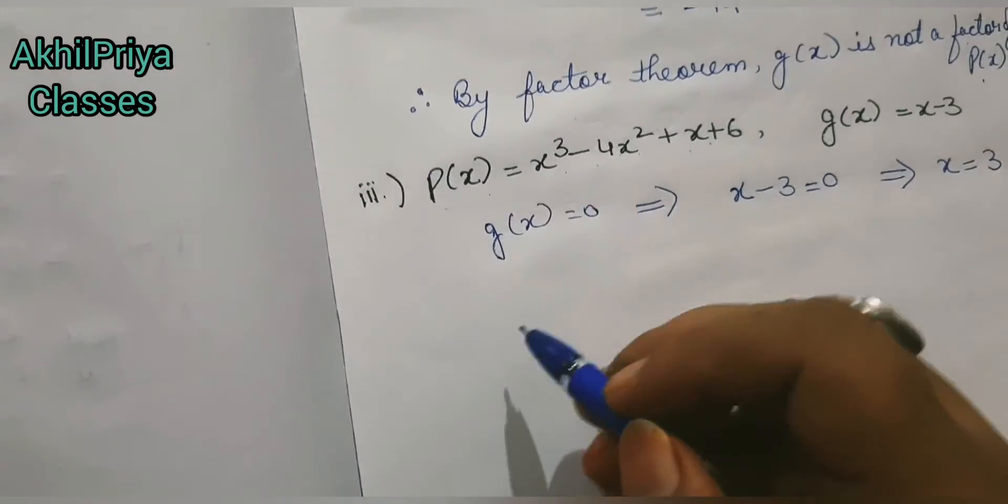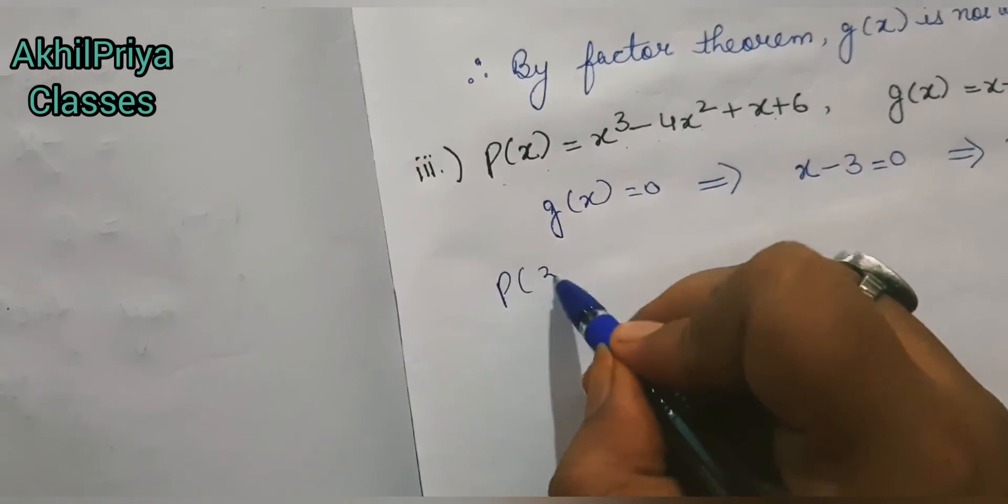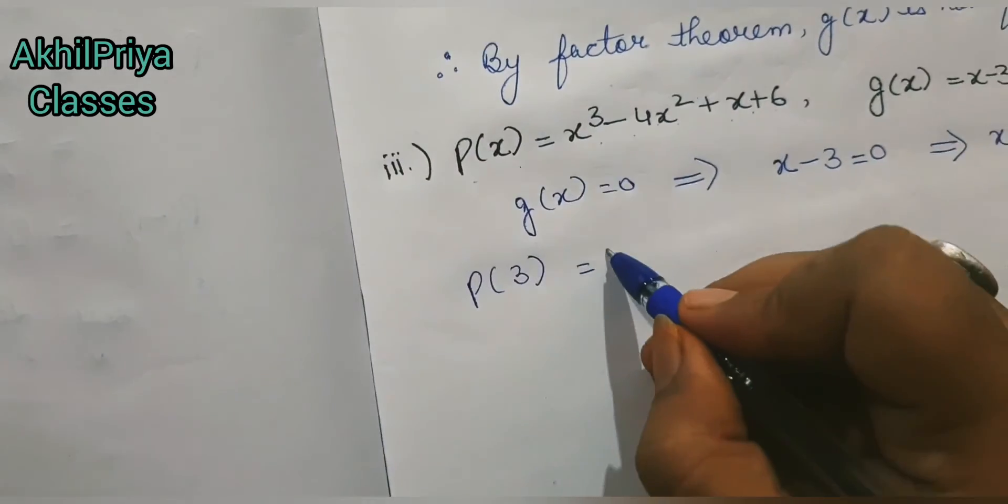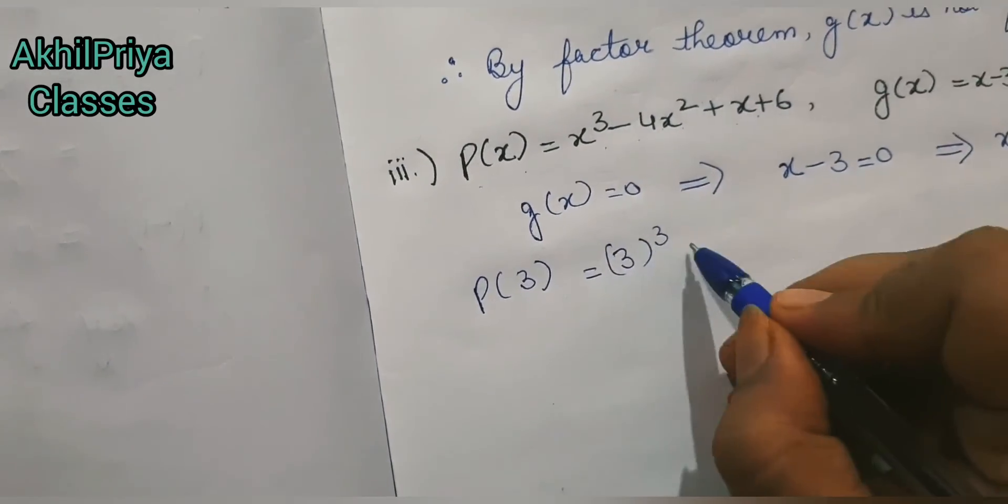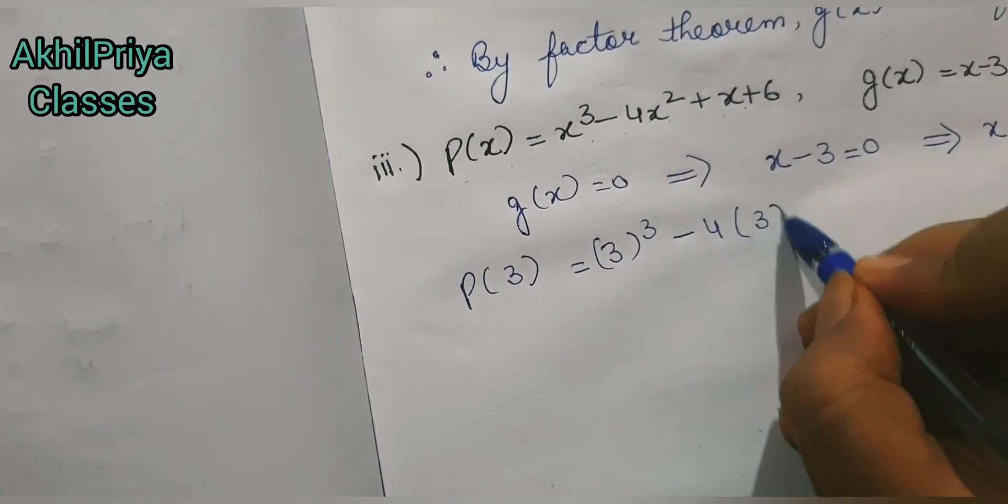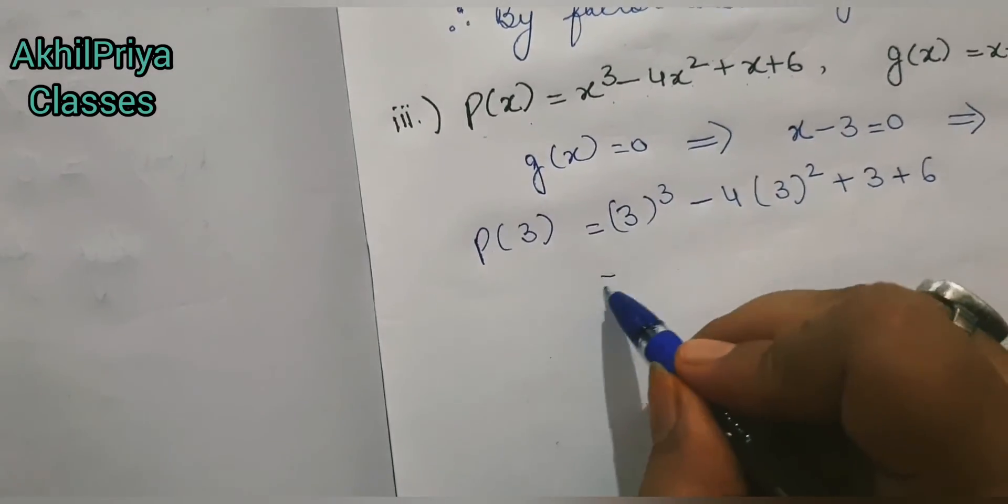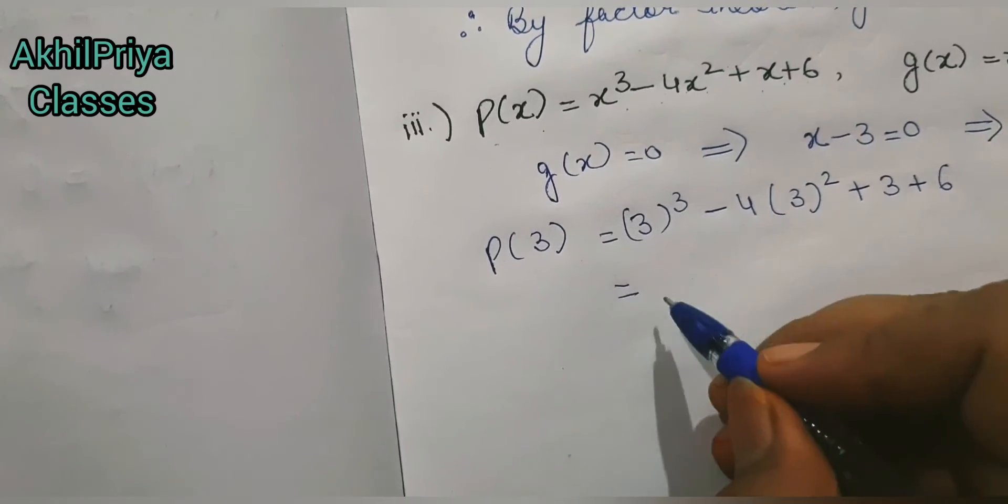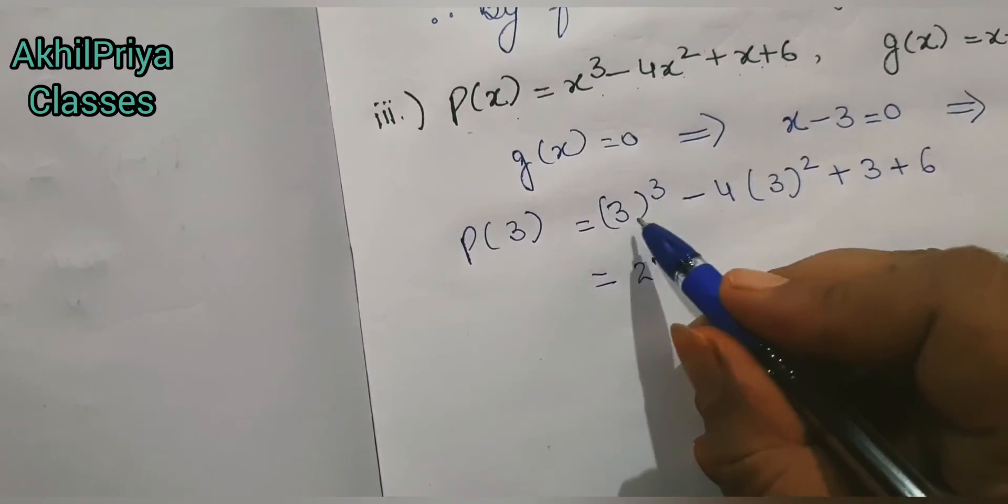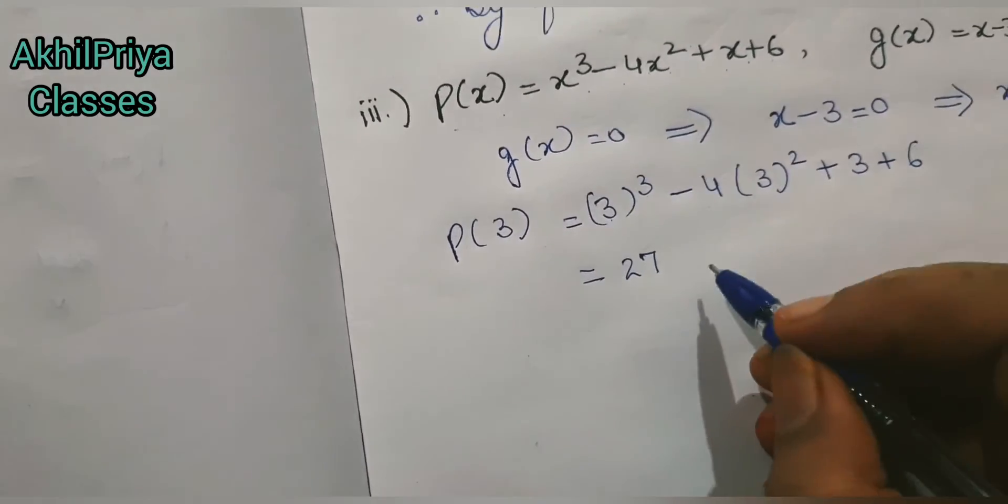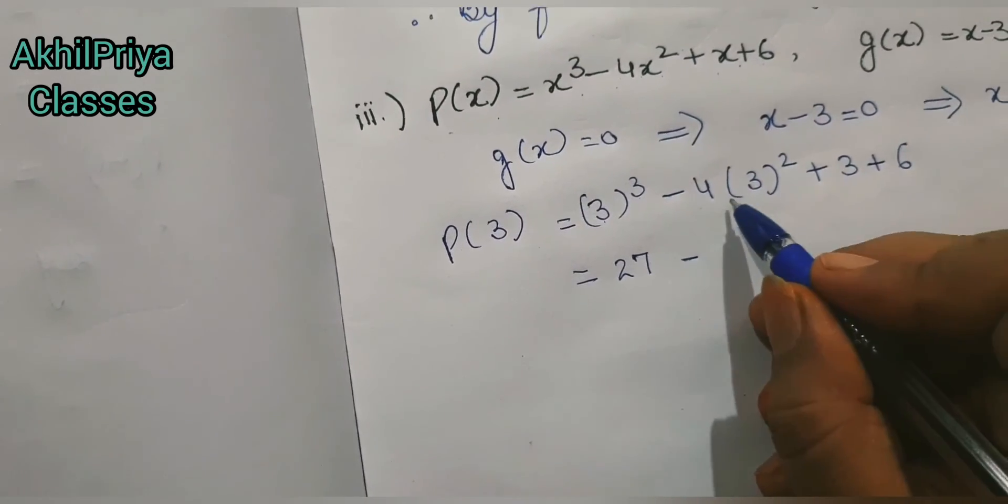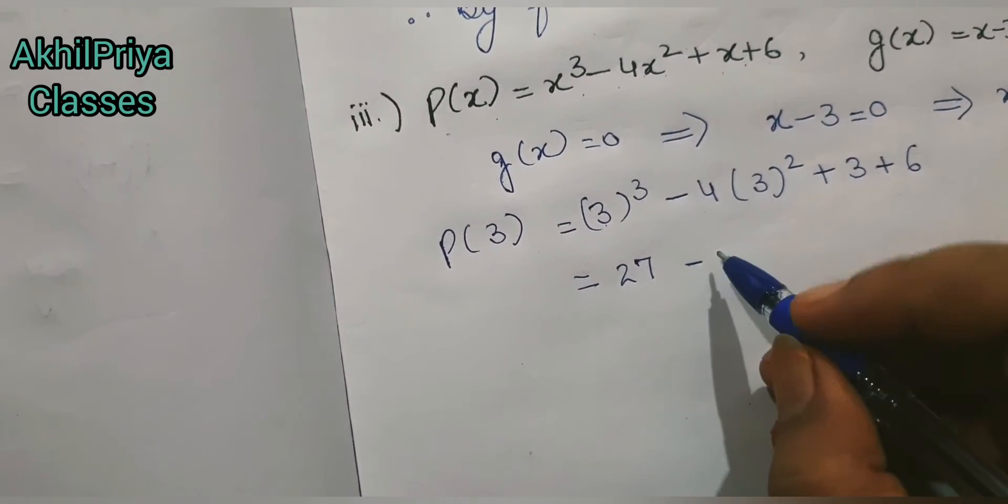So here I can write p(3) = (3)³ - 4(3)² + 3 + 6. Now when we simplify this, 3³ = 27, and 4 × 3² = 4 × 9 = 36.